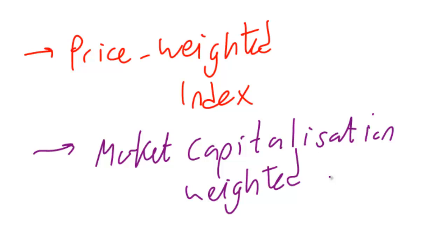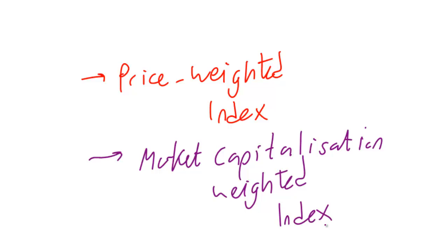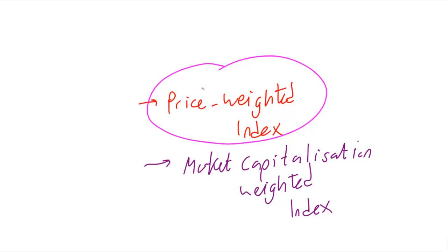Usually this is just called market cap. What it means is if it's a very big company with a high amount of capital involved, it will be very strongly weighted in the index. If it's a very small company, it will have a very small weighting in the index, whereas price-weighted indexes are purely based on the price of the stock.